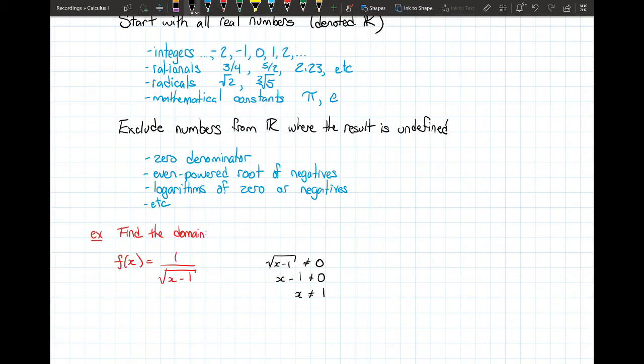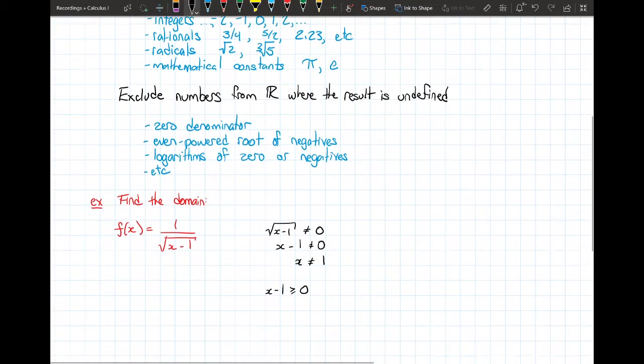You also see that we have a radical, a square root. Regardless of the fact that it's in the denominator, the stuff inside of a square root has to be greater than or equal to zero. So that's another restriction. We've got the fact that x minus 1 has to be greater than or equal to zero. And you can treat that as an equation, leading you to x greater than or equal to 1.